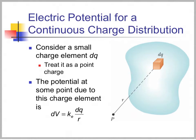We've got this blob of charge, and we're going to break it up into small little chunks — we'll call that little chunk dq. The little bit of potential at point P is kdq over r. The nice thing about doing potential for continuous charge distributions is when we integrate, we don't have to worry about breaking something up into vectors, since it only depends on r, not the direction.